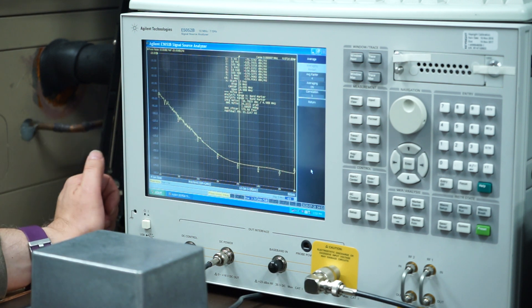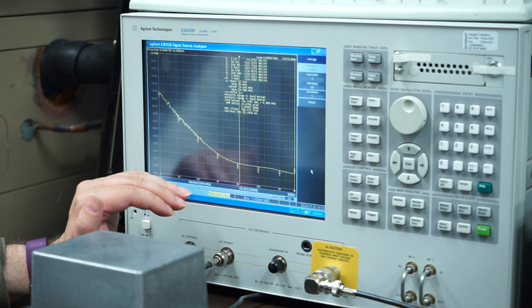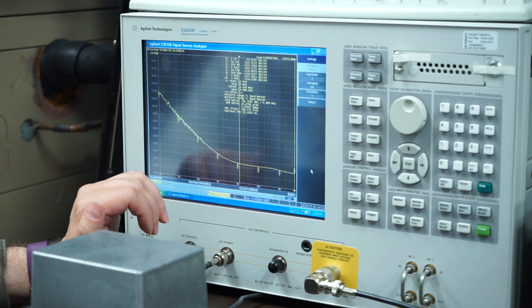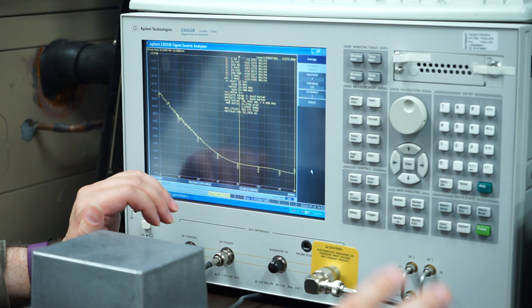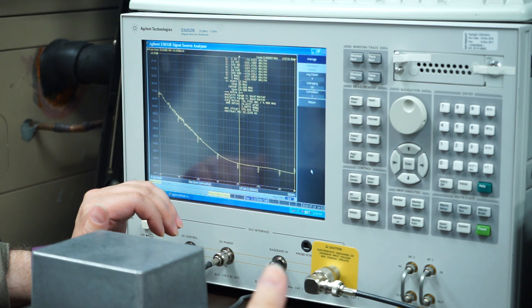One of the other issues in the industry is not only having the instrument, but knowing how to use it. In this case, we're getting the anticipated curve. It's a fundamental crystal. We shouldn't see a bunch of other spurs in it. If we did, we'd have to determine whether they're part of our device or part of our test and measurement setup.